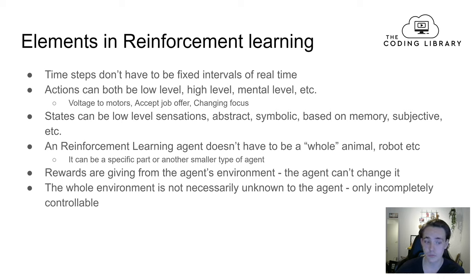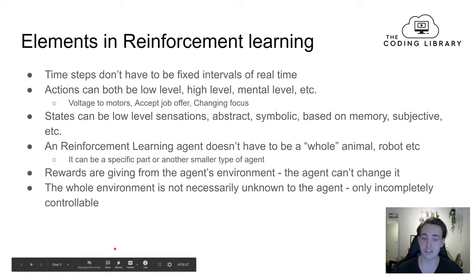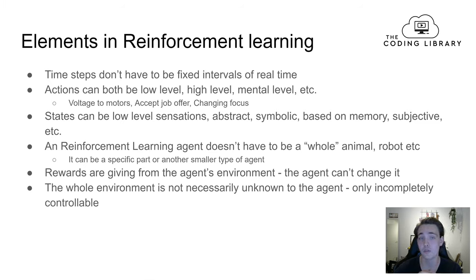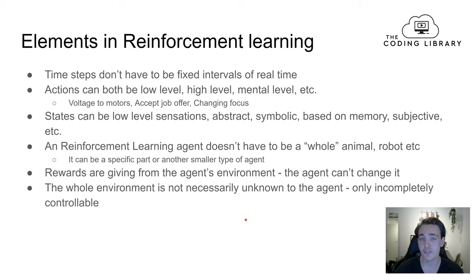Rewards are also something we define ourselves and are given from the agent's environment, but we should make sure the agent cannot change the rewards — we want to give the agent rewards based on how well it performs. The agent shouldn't be able to define or modify the rewards. The environment is not necessarily completely unknown to the agent — we could feed information to the agent if we want it to learn faster. However, the agent shouldn't be able to control the environment; it should only interact with it.